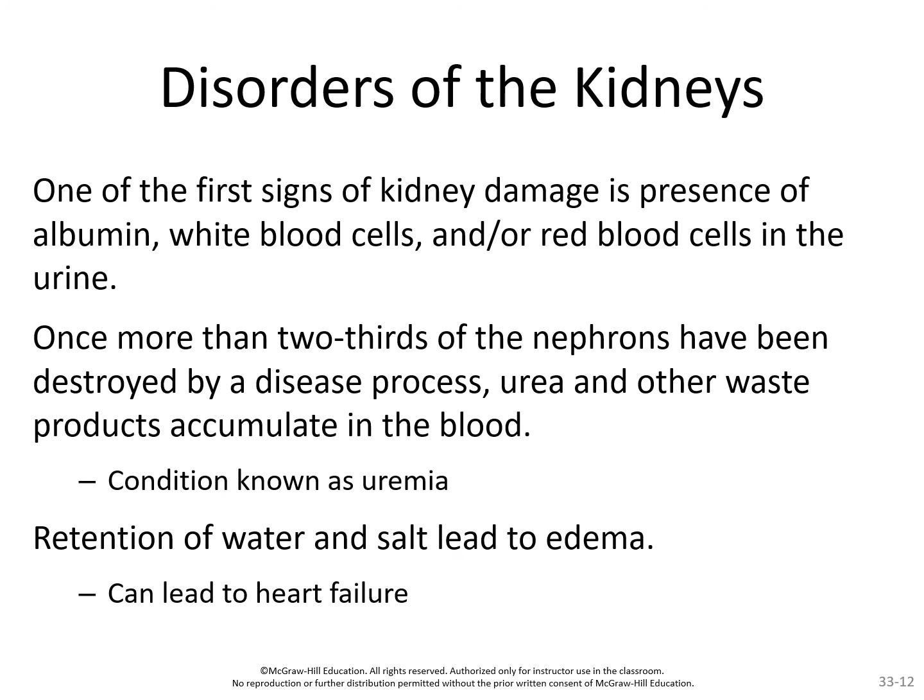One of the first signs of kidney damage is the presence of albumin — a large protein — or any type of blood cell in the urine. If these appear, there's physical damage to the kidney. If more than two-thirds of the nephrons are destroyed by disease, urea and other waste products accumulate in the blood — a condition called uremia. The biggest problem with uremia is that the excess waste products pull water toward them, causing you to retain water and salt, leading to edema or fluid accumulation throughout the body. Fluid can accumulate in the sac surrounding the heart, leading to heart failure — which is essentially what congestive heart failure is.